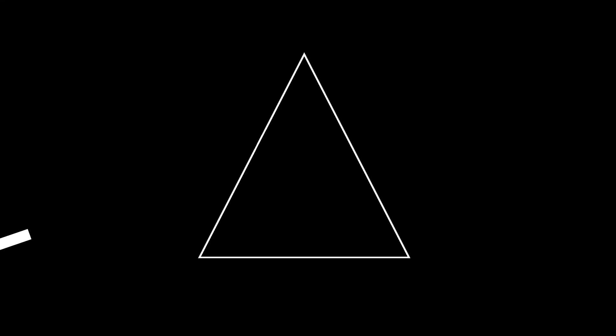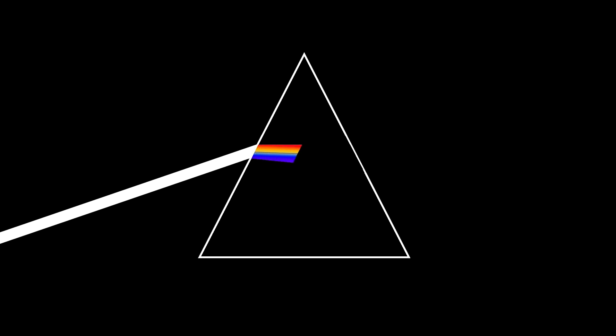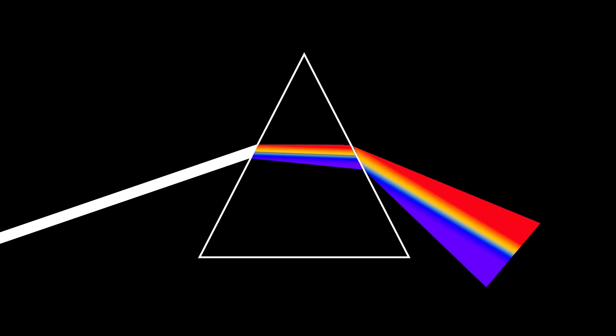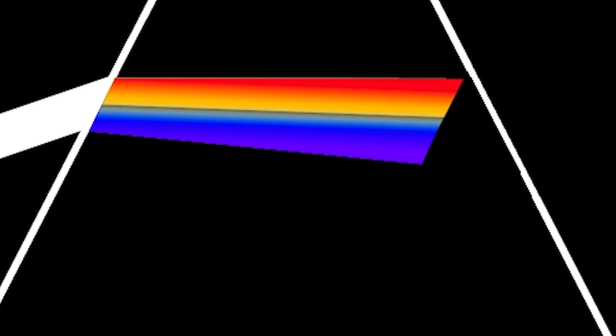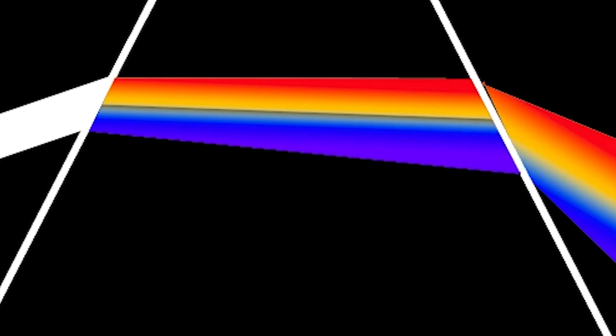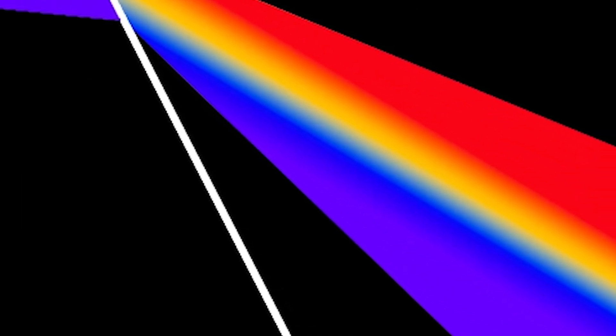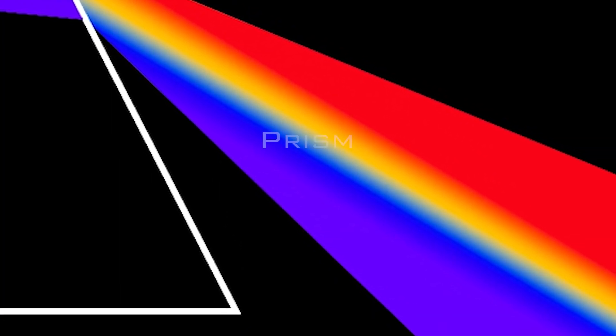When light refracts from an angular incidence, it breaks apart into different wavelengths. This is because different wavelengths interact with electrons in glass to different extents, and so are bent slightly differently. Red light, with the longest wavelength, is bent the least, while violet light, with the shortest wavelength, is bent the most — everything else is in between. This causes the light to pull apart as it travels through the glass, and still further apart as it exits, creating what we commonly call a prism. The breaking up of white light into its colored components is called dispersion.